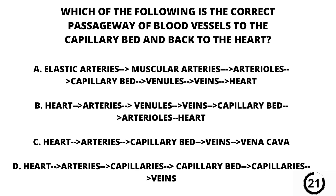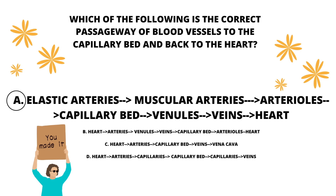Question number 30. Which of the following is the correct passageway of blood vessels to the capillary bed and back to the heart? A. Elastic arteries, muscular arteries, arteries, arterioles, capillary beds, venules, veins, then the heart. B. Heart, arteries, venules, veins, capillary bed, arterioles, heart. C. Heart, arteries, capillary beds, veins, vena cava. Or D. Heart, arteries, capillaries, capillary bed, capillaries, veins. Our answer here is A. The elastic arteries come right off of the heart and branch off to your muscular arteries, then your arterioles, then your capillary bed, your venules, your veins, and back to the heart again.